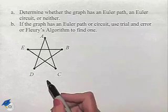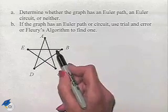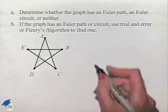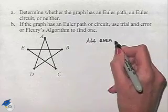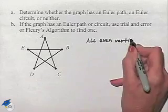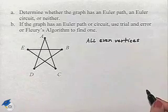Well, we have a shape of a star, and notice that we have five vertices, each of which has two edges coming off of it. So we have all even vertices. Whenever we have all even vertices, we know we're going to come up with at least one Euler circuit.